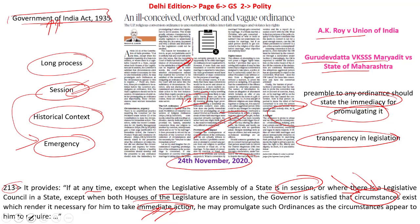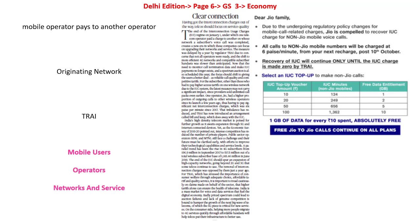Now let's look into the next article, titled 'Clear Connection.' This article is speaking about interconnection usage charges. Let me explain this concept. Let's say there is a person A and another individual B. A has taken the connection of Airtel, while B is using Jio.